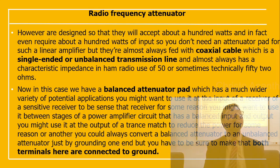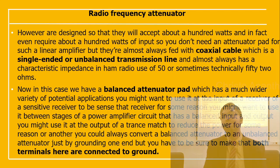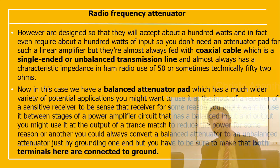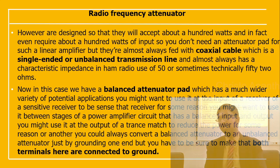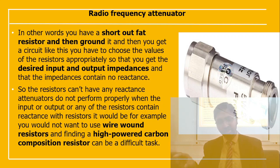The balanced attenuator pad can be used at the input of a sensitive receiver to sense a particular signal, or at the output of a transmatch to reduce power. You can convert a balanced attenuator to unbalanced by grounding one end, making sure both terminals are connected to ground. Shorting out the shunt resistor and grounding it allows easy operation.